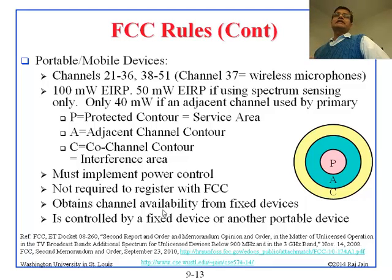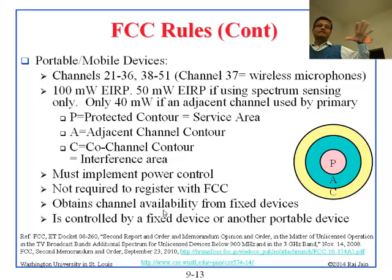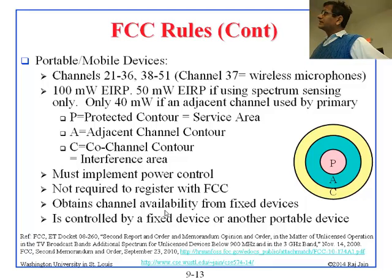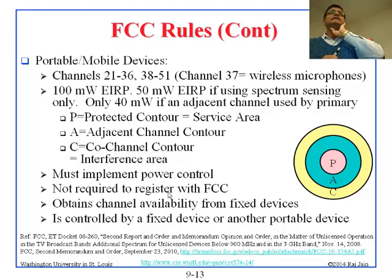So there are three areas: P (protected), A (adjacent channel), and C (co-channel). These areas are not circles — they depend on where hills, valleys, and terrain features are, so people go and do measurements to figure them out. On the internet you can find maps showing all these stations and their reach. Protected contour is the exclusive service area, adjacent channel contour is for the next channel, and co-channel contour covers the same channel.